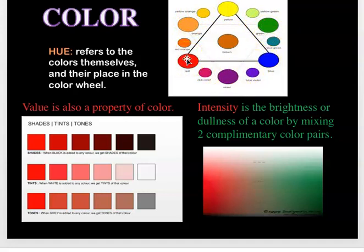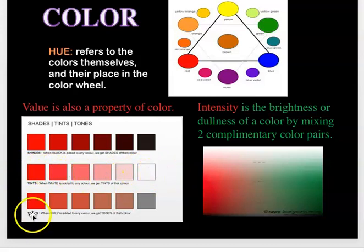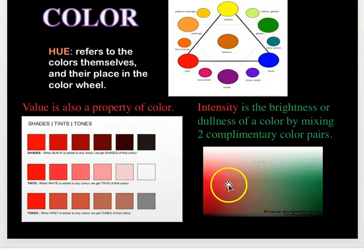The next section on your worksheet asks for shades, tints, and tones. Shades is when you add a little black to your color. Tints is when you mix white with your color. Tone is when you add gray to your color — and those toned colors are useful for painting nature. When thinking about intensity, it is not the same thing as value. Value involves adding white, black, and gray. Intensity is like mixing two opposite colors together.